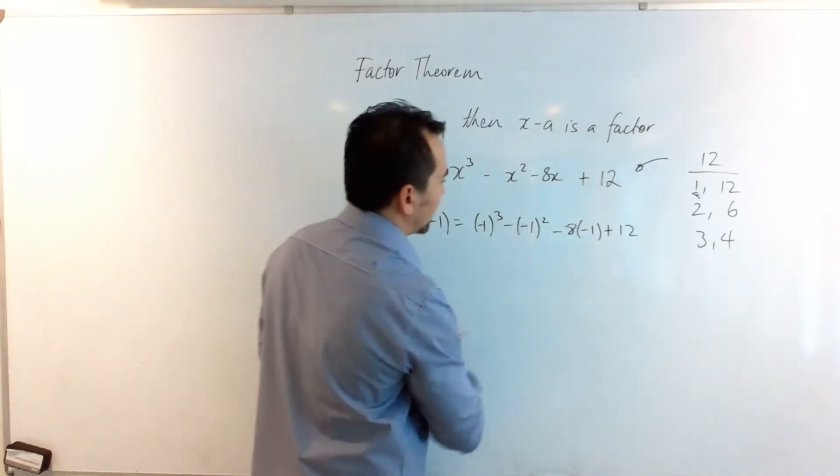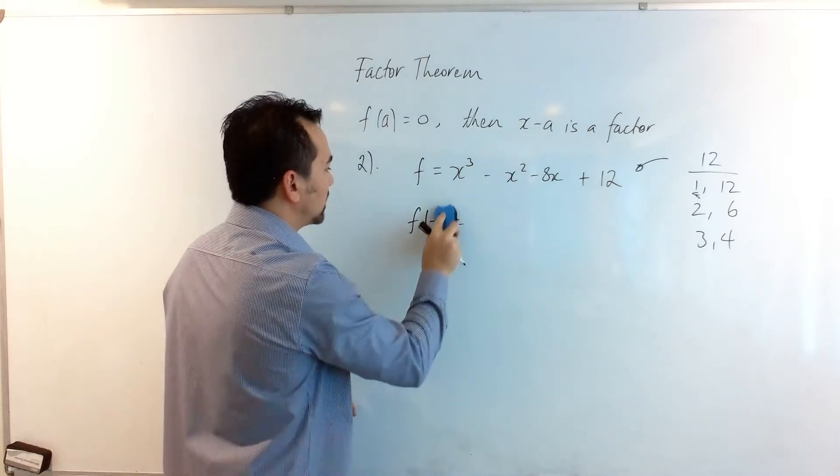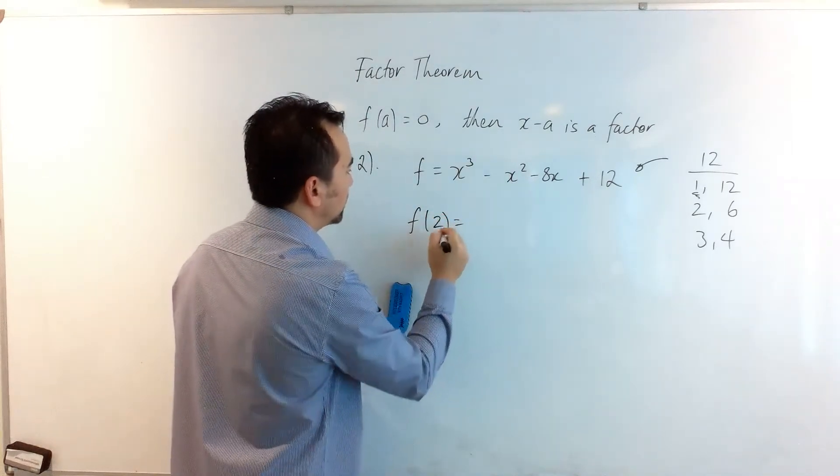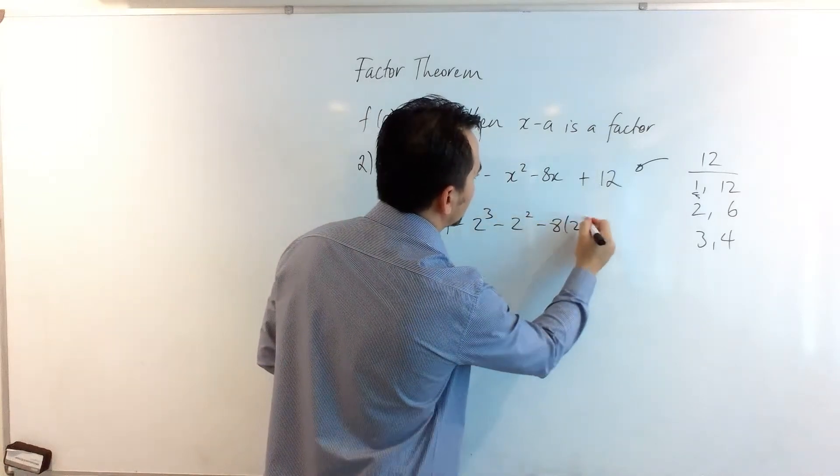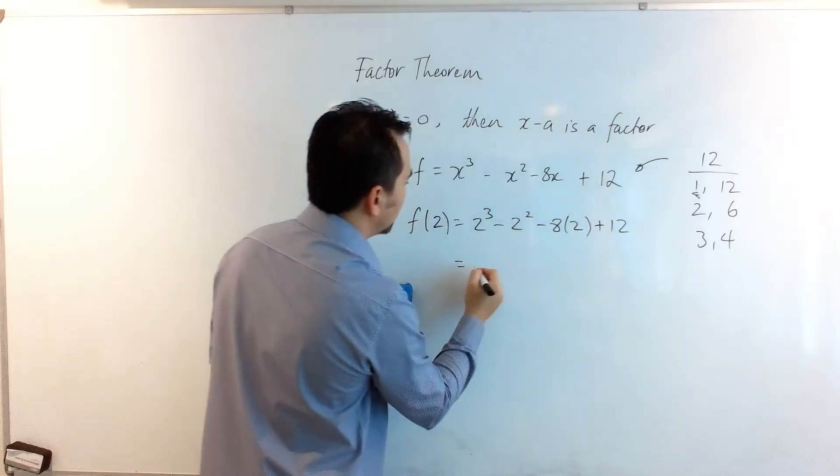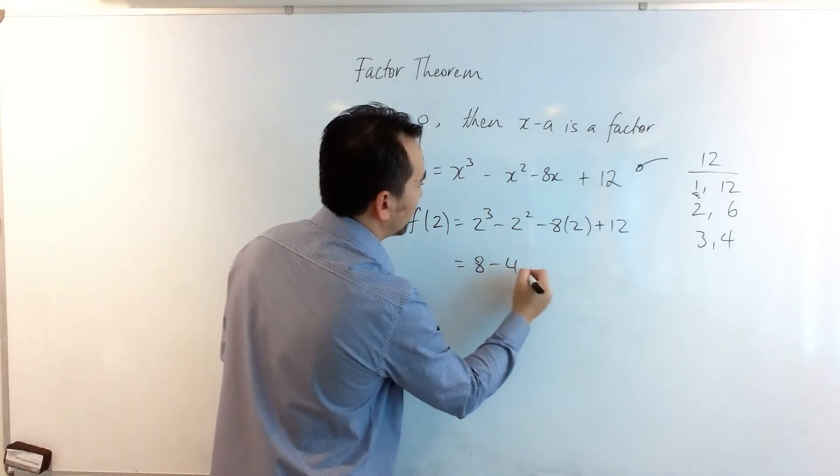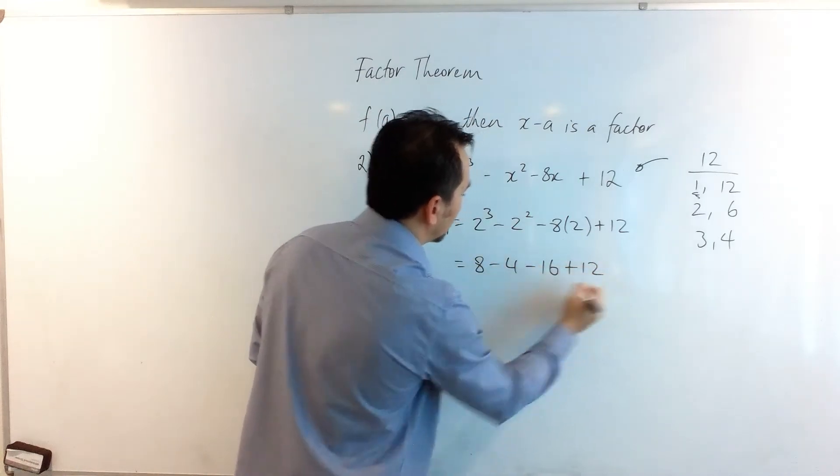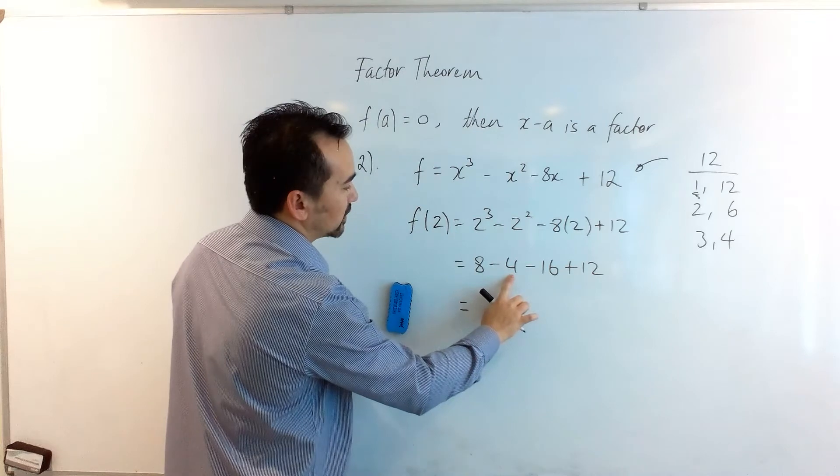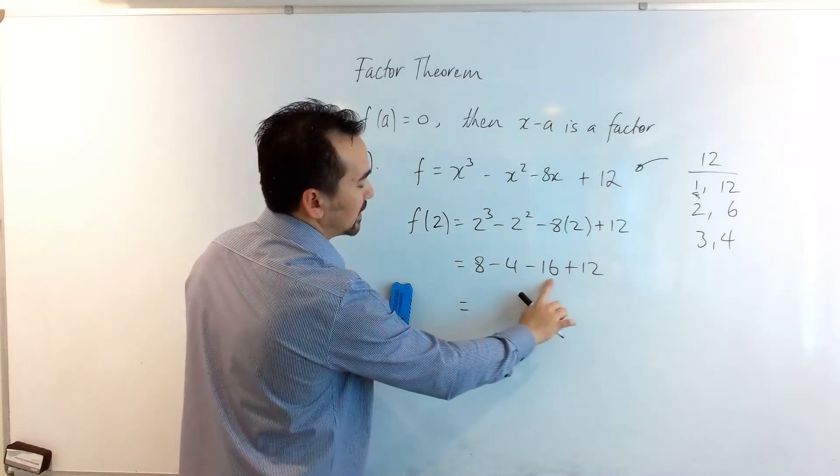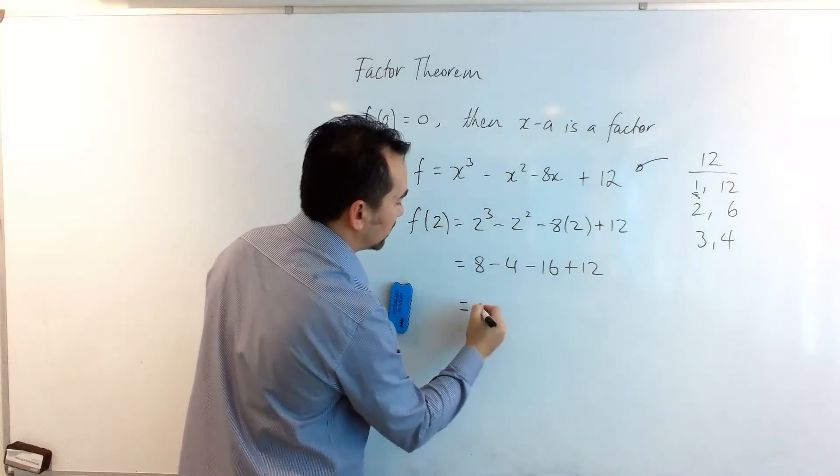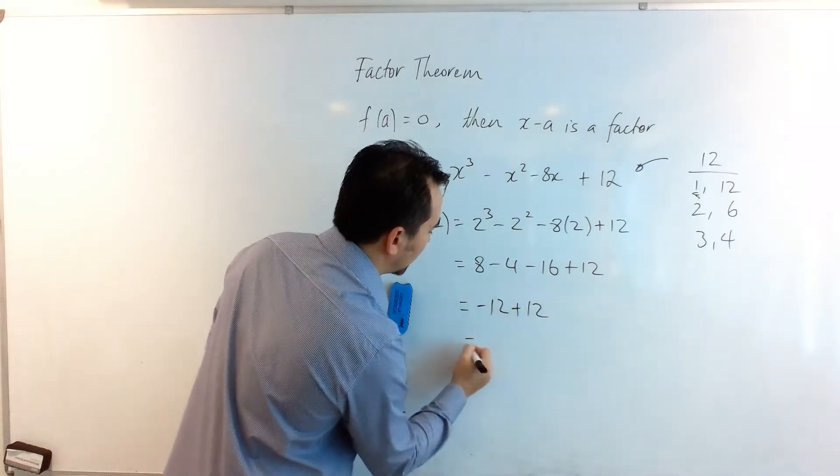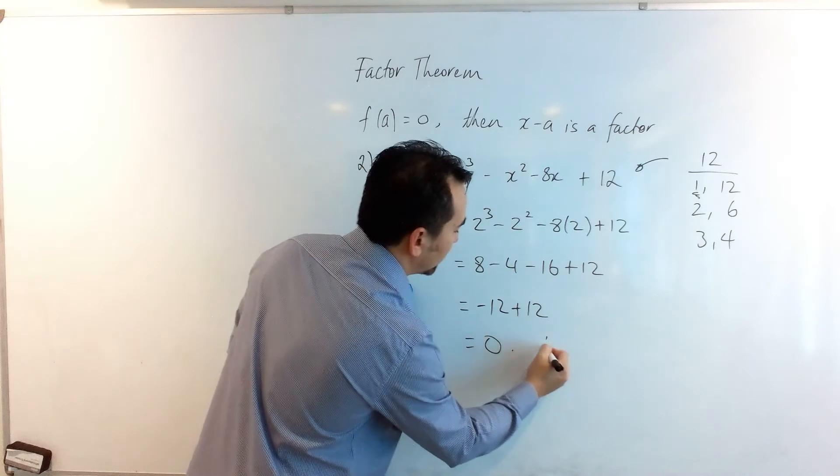So let's make a better educated guess. Let's stick to the positives, but this time let's try positive 2. 2³ - 2² - 8(2) + 12 is equal to 8 - 4 - 16 + 12. 8 - 4 is 4, 4 - 16 is -12, plus 12, and that comes out to be 0. We can say therefore